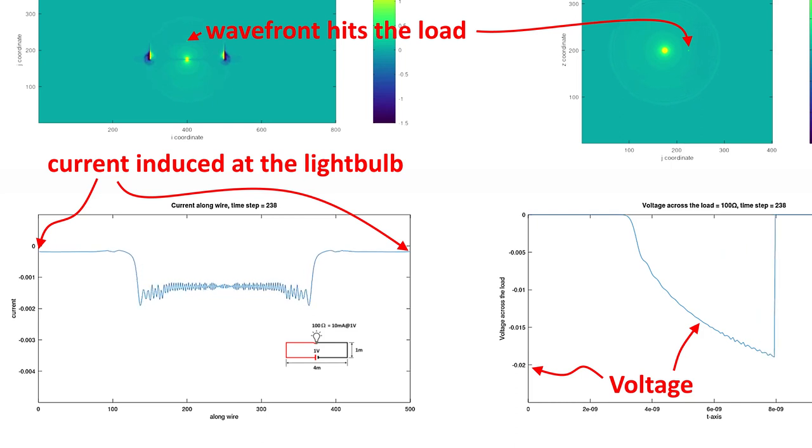So yes, Veritasium is right. The light bulb is first turned on by the EM wave when it hits the load at 3.3 nanoseconds, before the current arrives at the load through the wire.